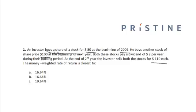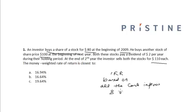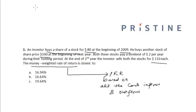The money weighted rate of return is the internal rate of return (IRR), and it is based on all the cash inflows and outflows. So the money weighted rate of return is nothing but the IRR, which is based on all the cash inflows and outflows.